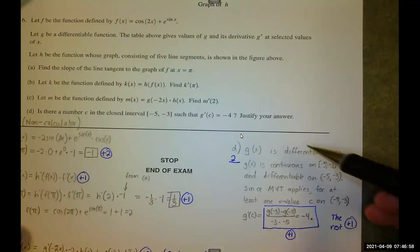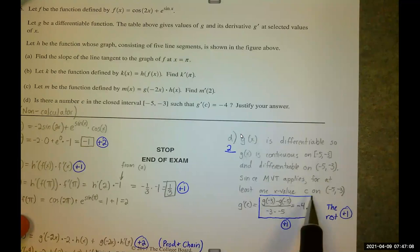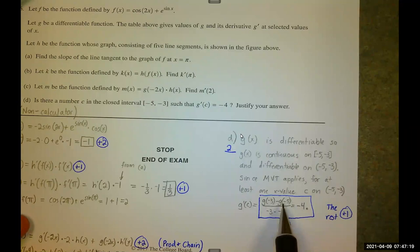It'll have a conclusive result if the output of the function is between those, but the output of the function is not. That's how I knew I was going to use the mean value theorem. So I talked about how G is differentiable, which means G is continuous on the closed interval and differentiable on the open interval. So the mean value theorem applies for at least one value C on the open interval, negative 5, negative 3. That was worth one point. You also got one point here for showing that G of negative 3 minus G of negative 5 divided by negative 3 minus negative 5. The average rate of change for G is negative 4.